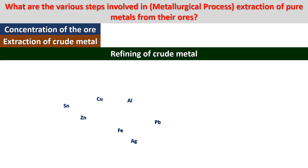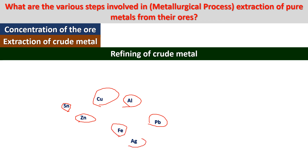Last one: refining of crude metal. Refining of crude metal is done to completely purify the metal. This is the last step — refining of crude metal.